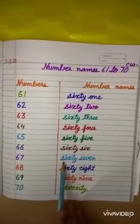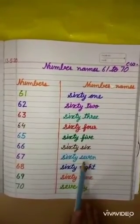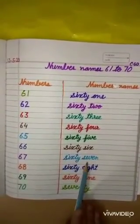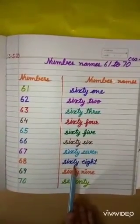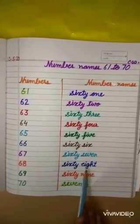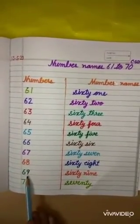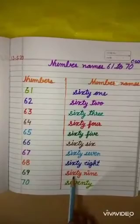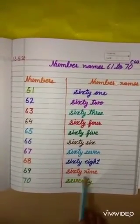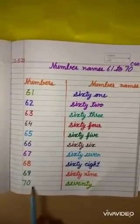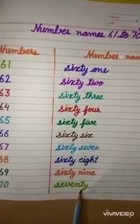67. S-I-X-T-Y, 60, S-E-V-E-N, 7 — 67. 68. S-I-X-T-Y, 60, E-I-G-H-T, 8 — 68. 69. S-I-X-T-Y, 60, N-I-N-E, 9 — 69. 70. S-E-V-E-N-T-Y — 70.